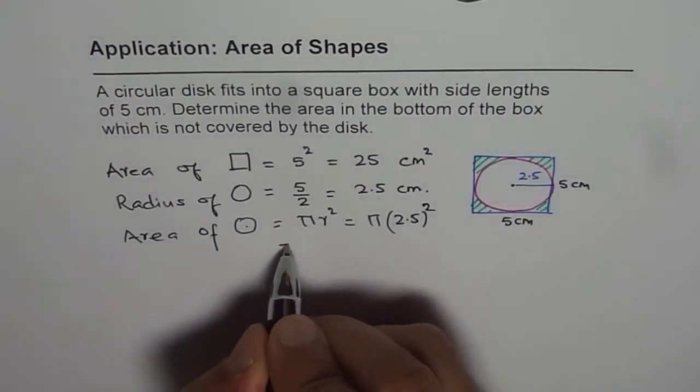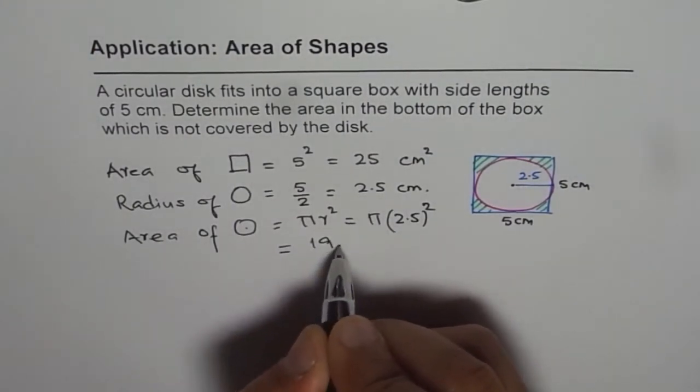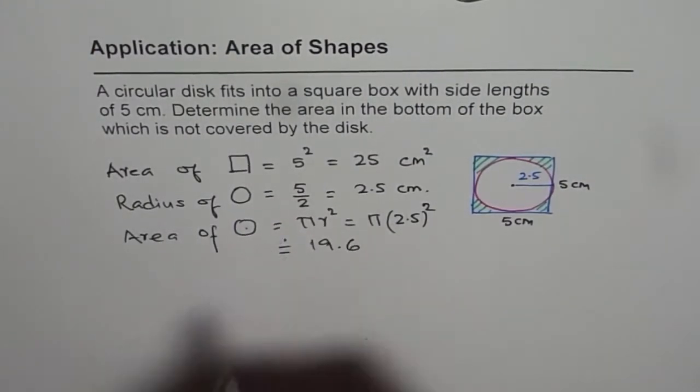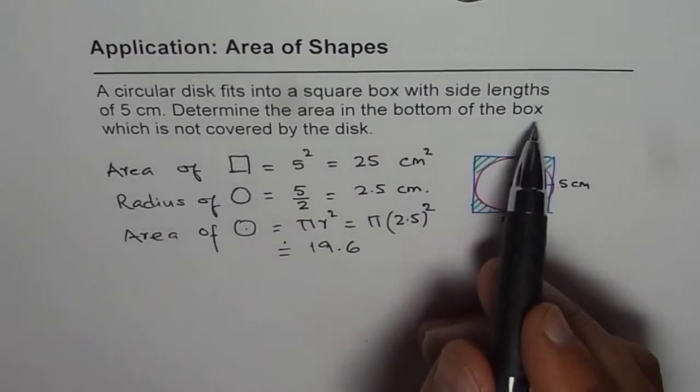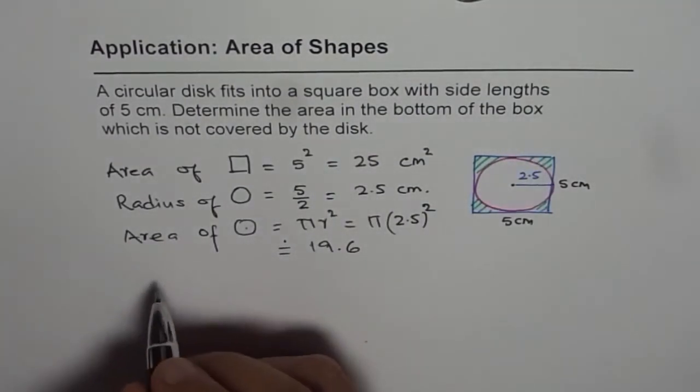We need to find the area in the bottom of the box which is not covered by the disc. So what is the area not covered?